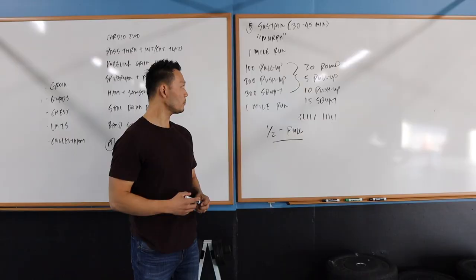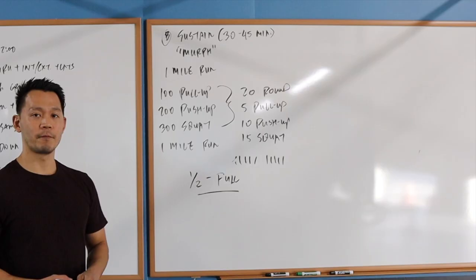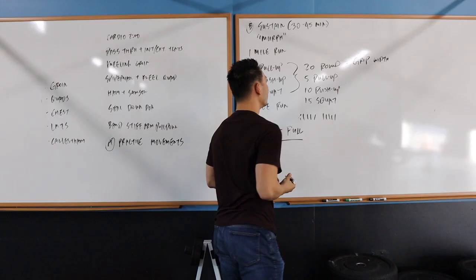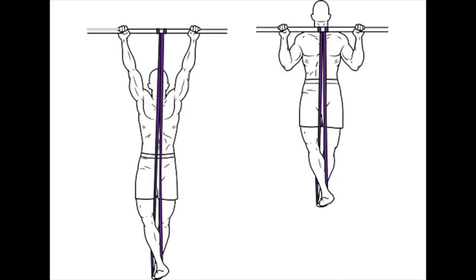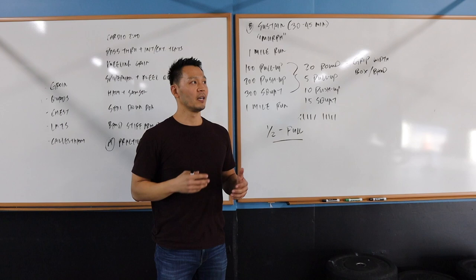For the pull-ups, what we did differently was allowing different grip widths, and we also allowed box or band assistance. Obviously, the majority of people cannot do a lot of strict pull-ups, even with kipping pull-ups that you'll see me doing as a demo in the video.